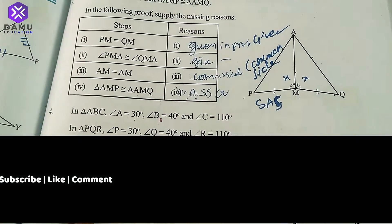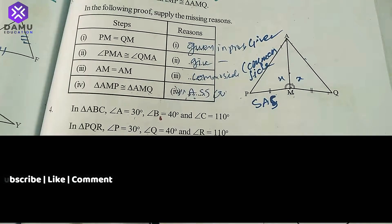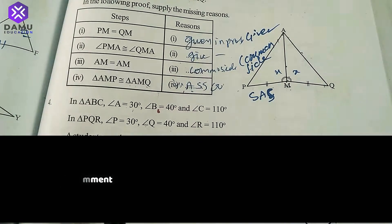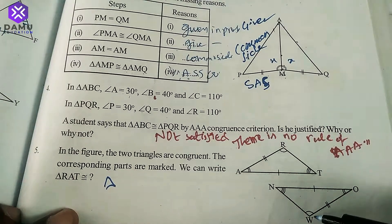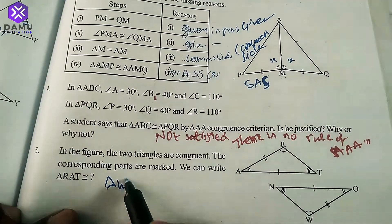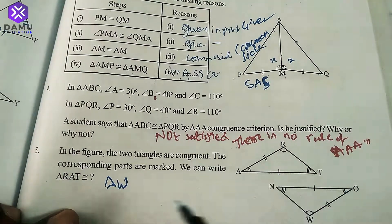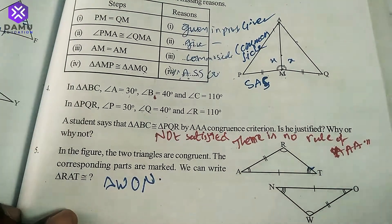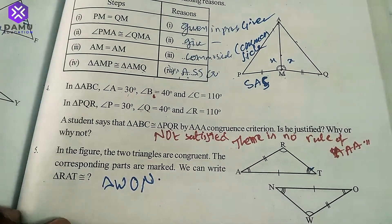In the figure, the two triangles are congruent and the corresponding parts are marked. We can write angle RAT corresponding to angle WON — for R write W, for A write O (two lines mark), and for T write V with N. So triangle RAT is congruent to triangle WON.